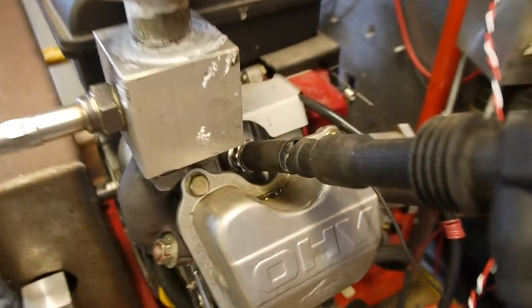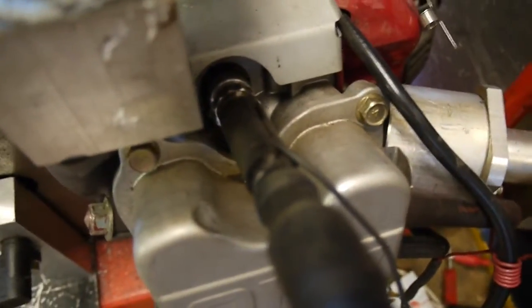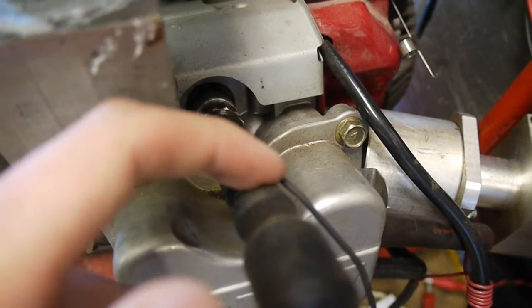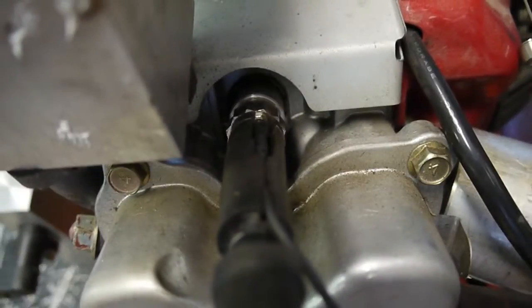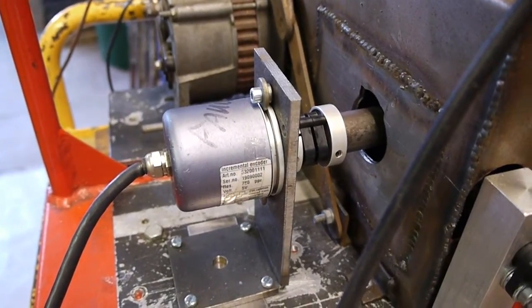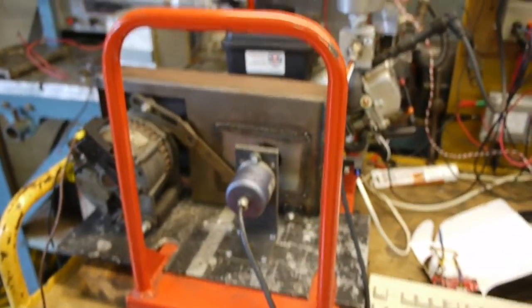We've also got an in-cylinder pressure sensor which is built into this spark plug. So this is a Kistler spark plug and just this wire here is the connection for the pressure sensor. And we've also got an optical encoder directly coupled to the crankshaft for 0.25 degree resolution crankshaft encoding.